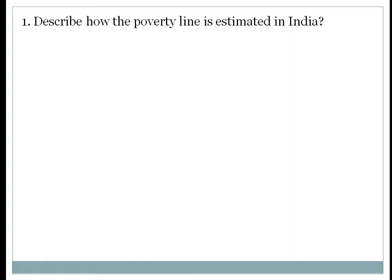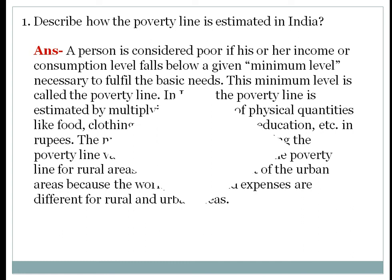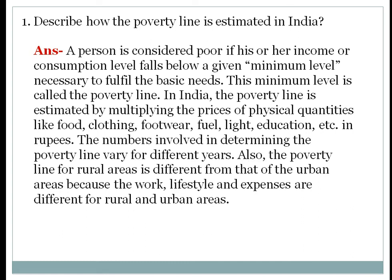This question — describing how the poverty line is estimated in India — can be asked in the examination for 3 marks. Students who have already written this question and answer in their notebook are not required to rewrite it, but those who have not yet done so, please do so. Take a notebook and write the question answers and prepare for the final examination. A person is considered poor if his or her income or consumption level falls below a minimum level necessary to fulfill basic needs.